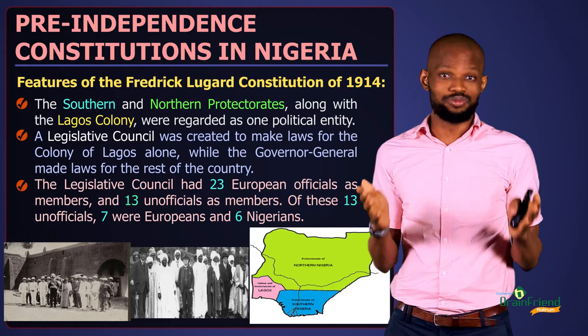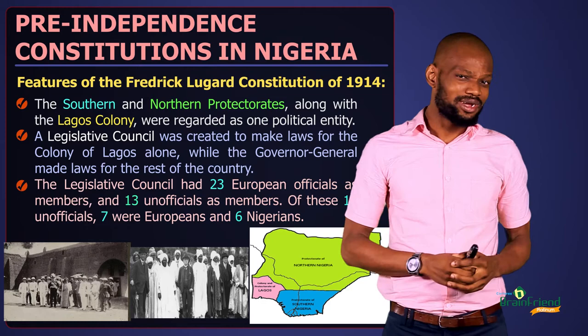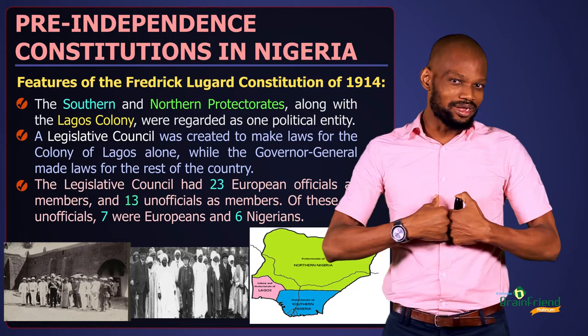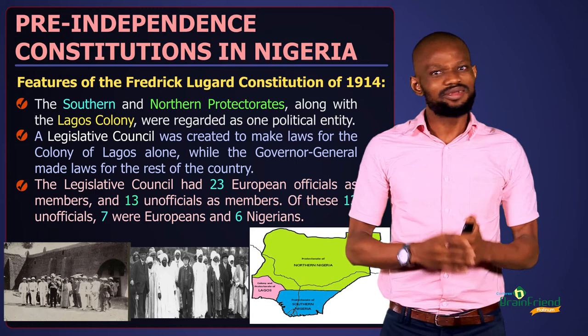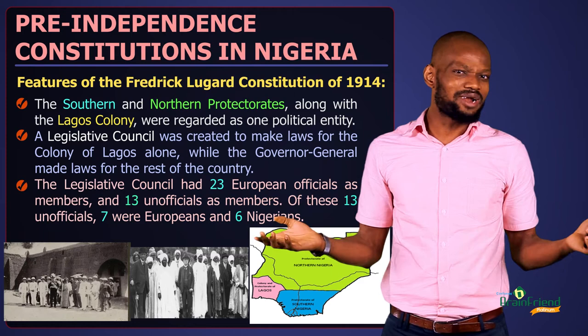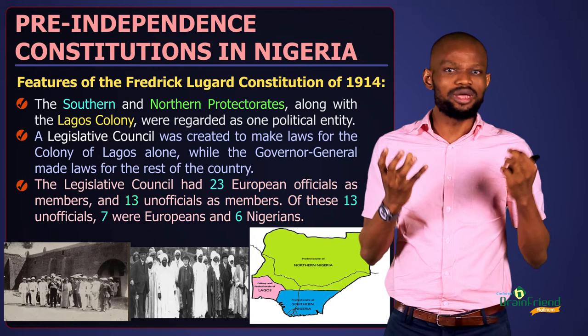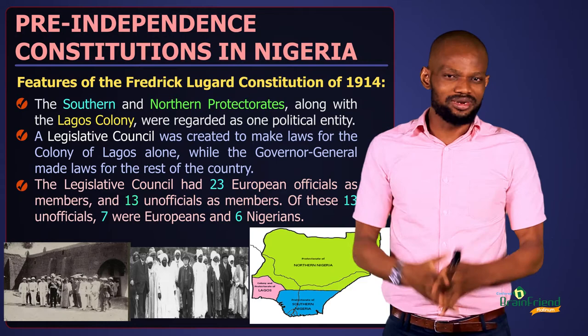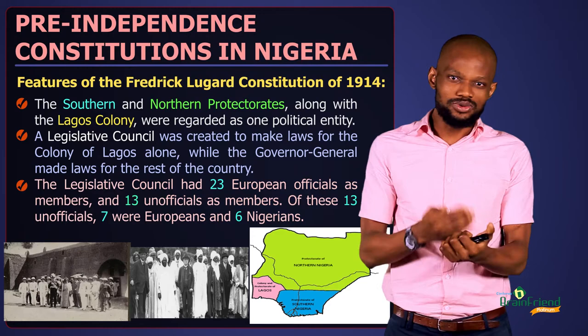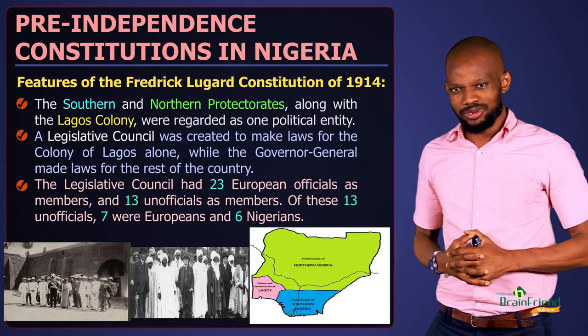Think about it: you go to a new place, fight a battle, conquer the people, and then bring foreigners to make laws for them. Do these foreigners understand the cultures of the people they are governing? There were also 13 unofficial members — seven were Europeans and six were Nigerians. However, those six Nigerians were perhaps just figureheads with no real input and no contribution to any decision-making process. It was done so that people wouldn't feel they had no representation in the legislative council.